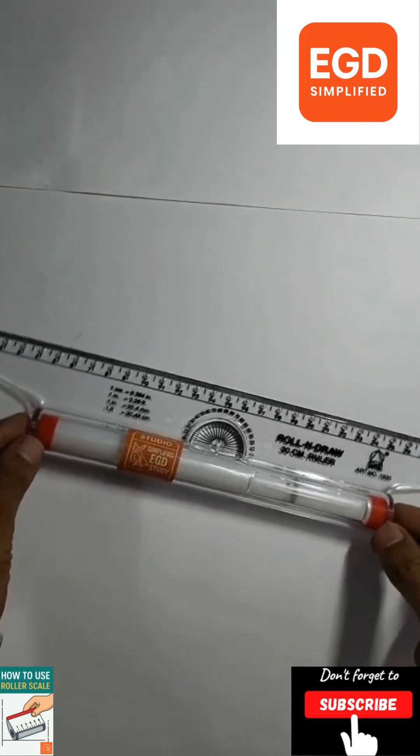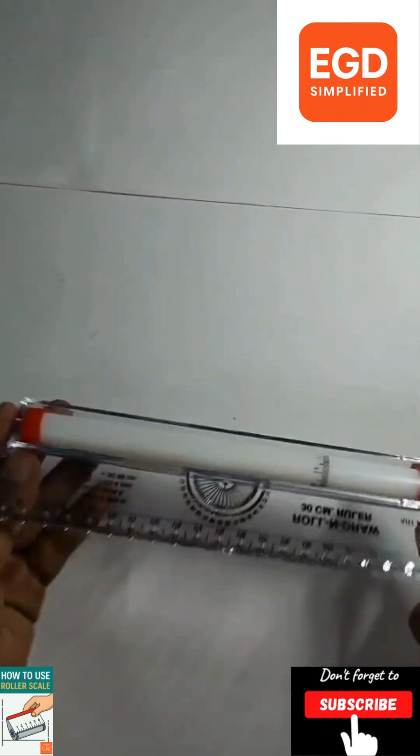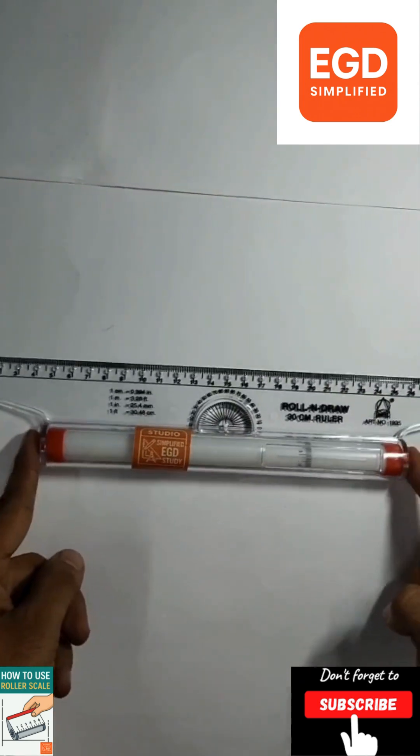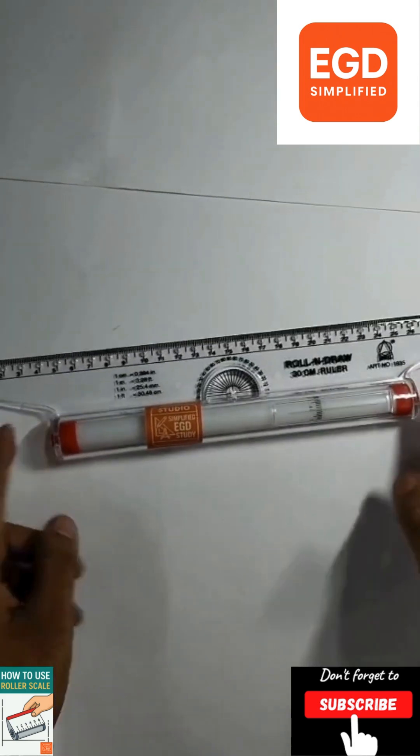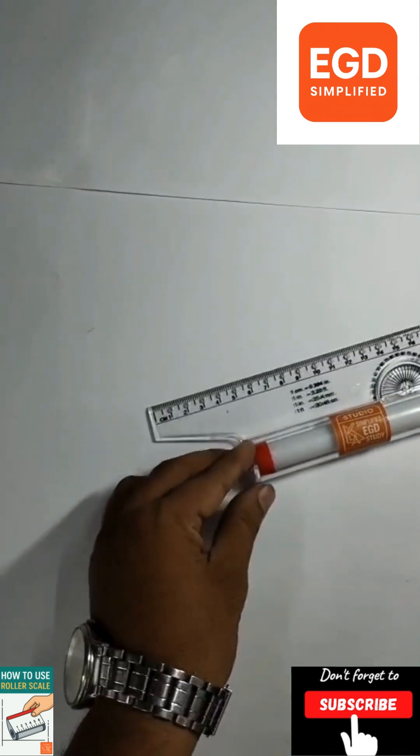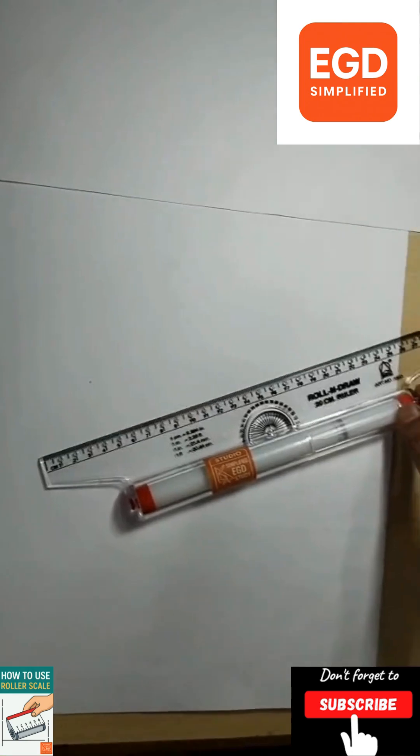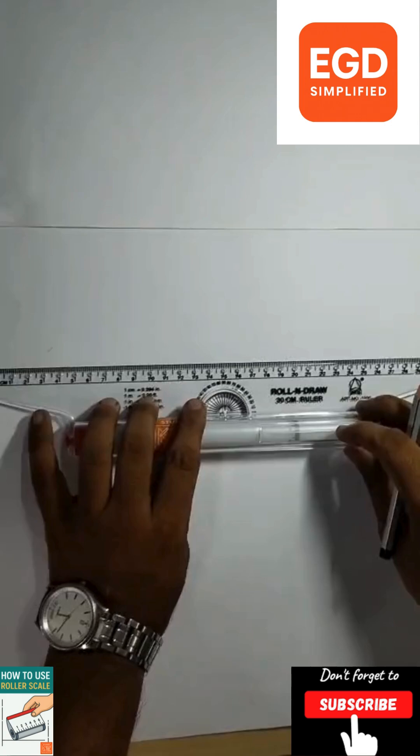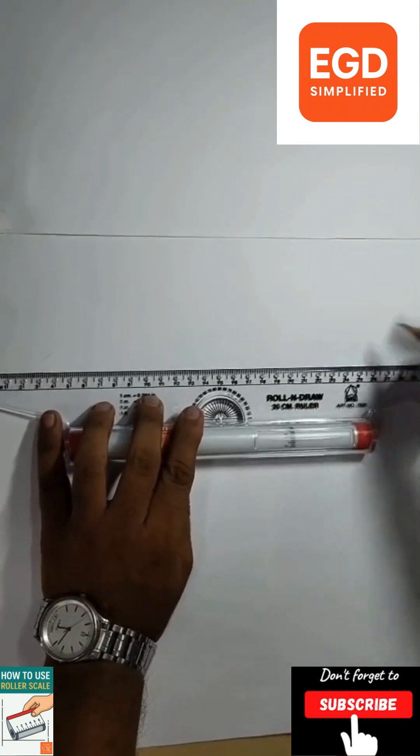This instrument is called a roll and draw or roller scale. It has a roller and there is a ruler. The end of this roller should be placed on the same level. If the level is misaligned, it won't be able to draw parallel lines. So the roller scale is used to draw parallel and perpendicular lines.